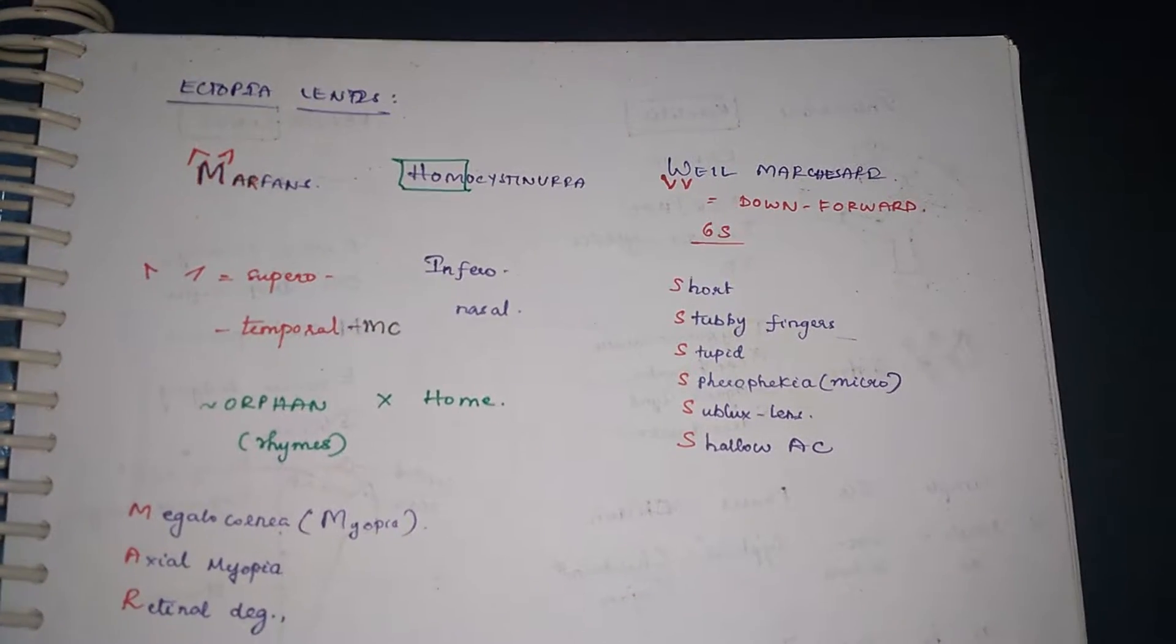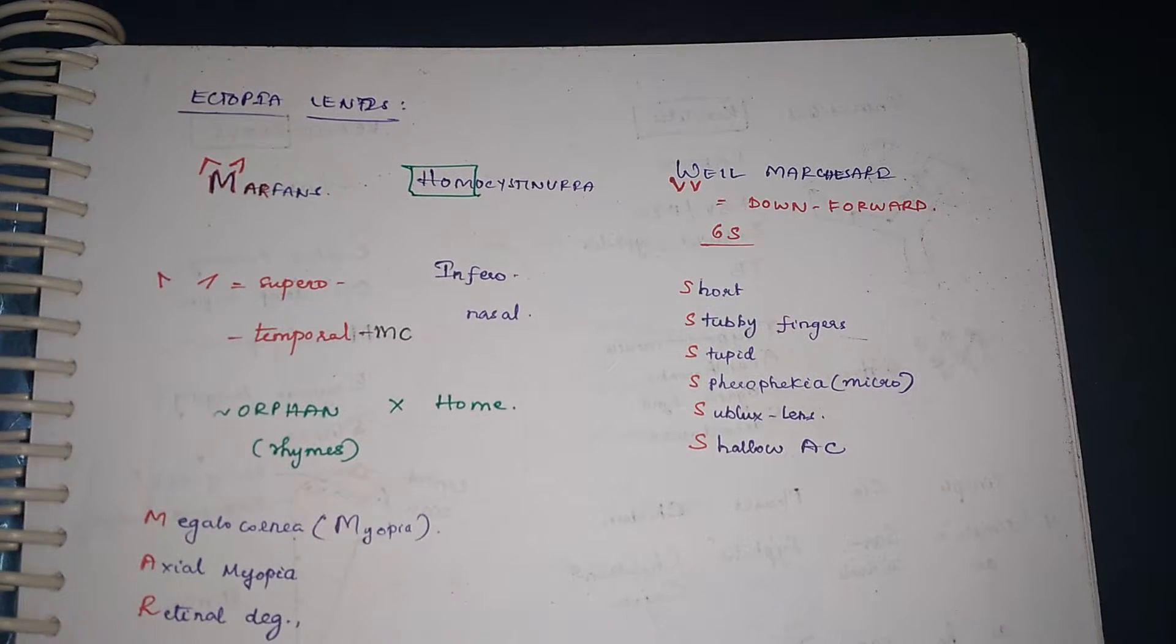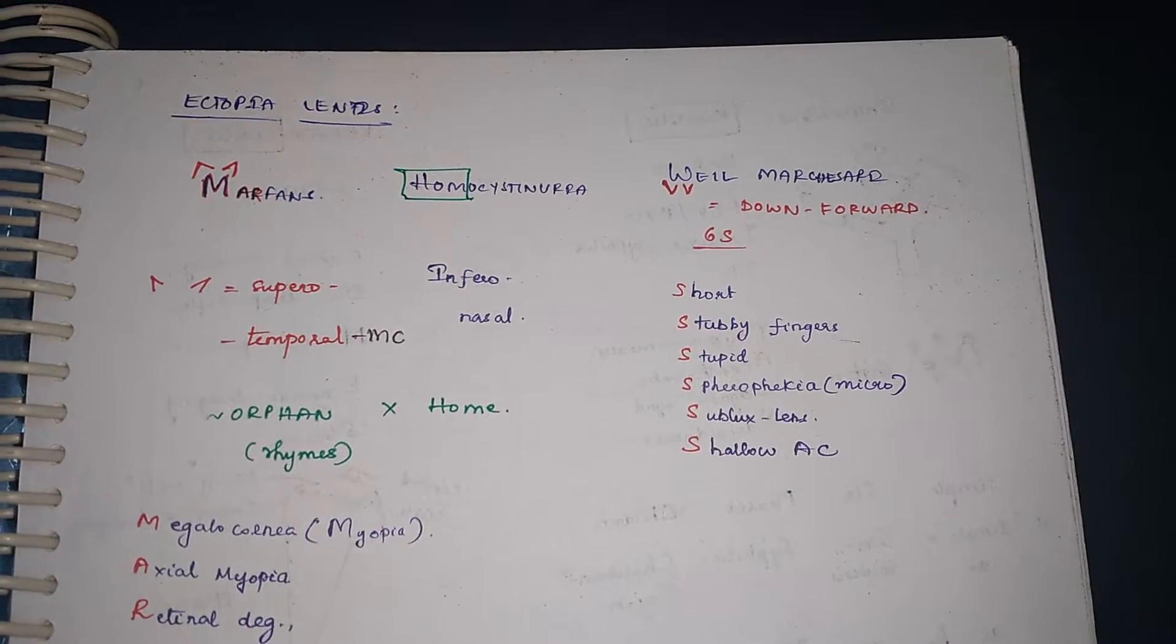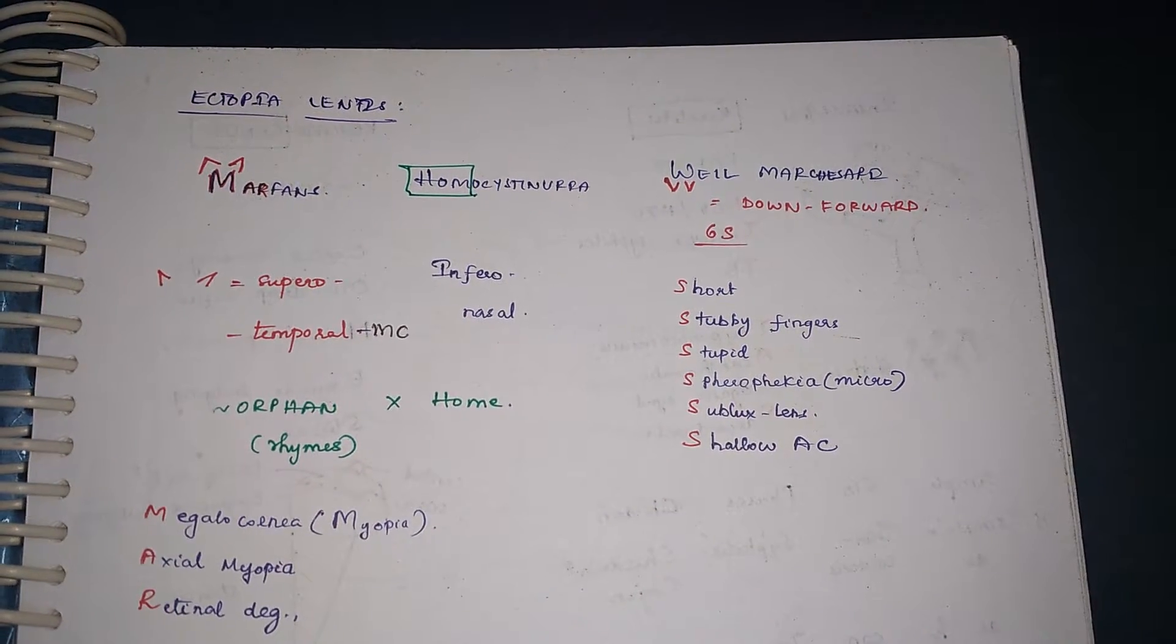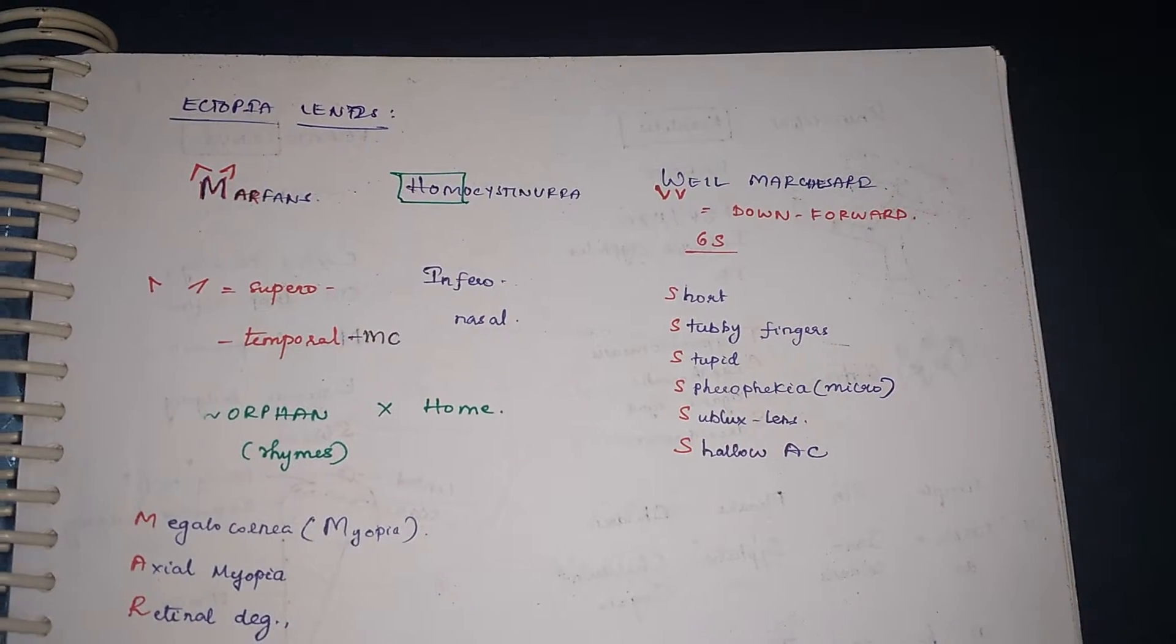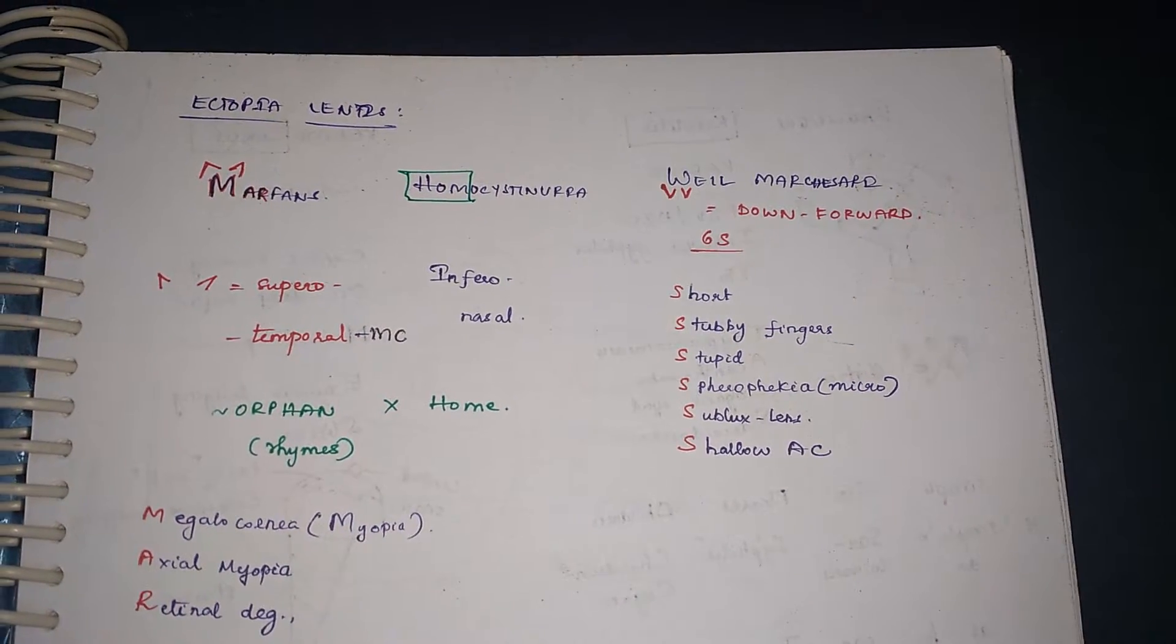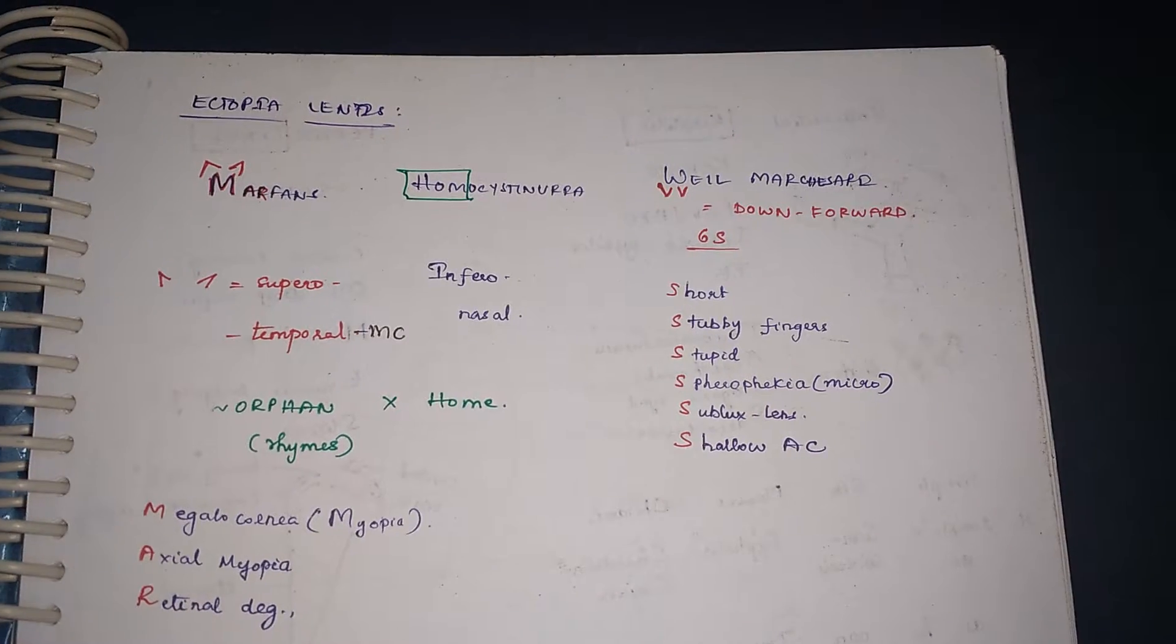Hi guys, welcome back to Medical Mnemonics Pocket. Today we have a mnemonic for ectopia lentis. Remember, there are three diseases for ectopia lentis: Marfan's, Homocystinuria, and Weill-Marchesani. If you can just remember Marfan's, we can get the other two diseases.